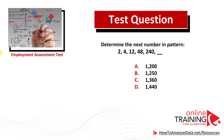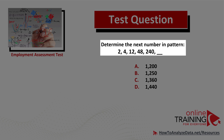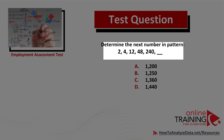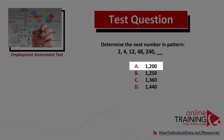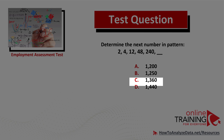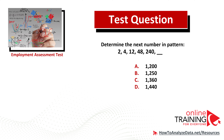Now I would like you to try a question which tests your knowledge of patterns. If you know the answer, please make sure to post it in the comment section of this video and I'll provide you with my feedback. Determine the next number in the pattern. You have the series: 2, 4, 12, 48, 240, and you need to determine the next number out of four choices: Choice A, 1,200; Choice B, 1,250; Choice C, 1,360; and Choice D, 1,440. Please post your answer in the comments. Thanks for participating.